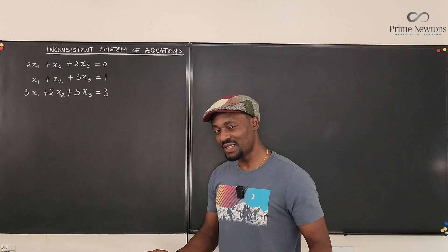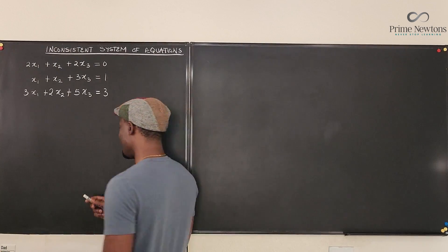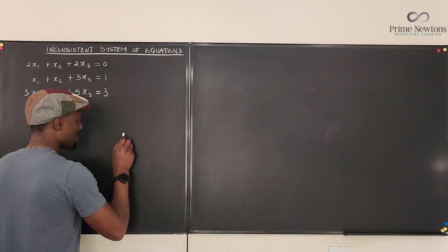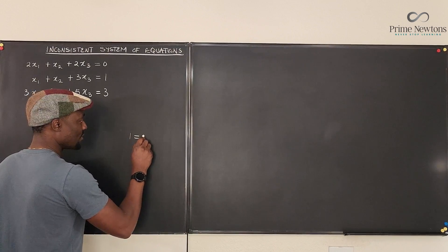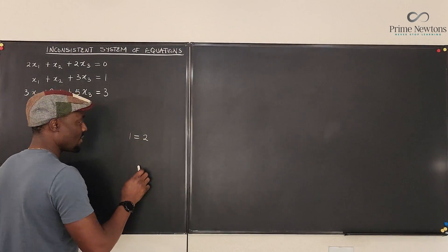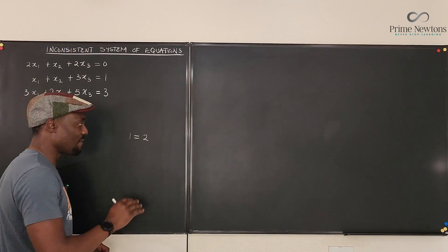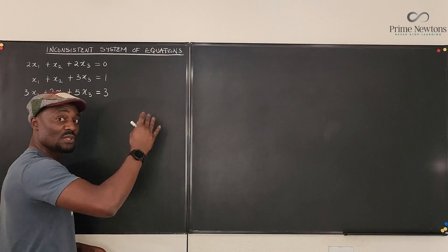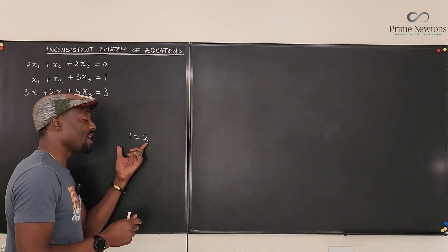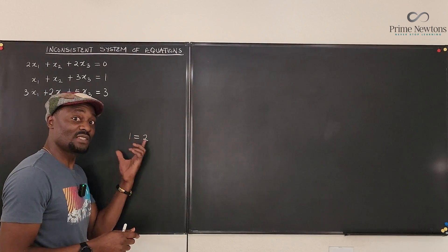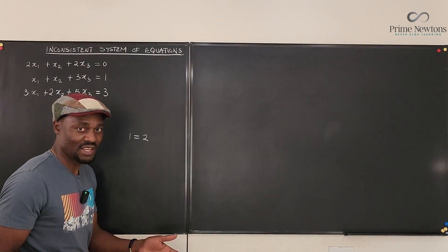So this is the meaning of inconsistency — it means you have things like 1 is equal to 2. Whenever this shows up in any calculation you're doing, there is no solution. It's either you've made a mistake, or the system itself is a mistake, or the problem you're solving is a mistake.